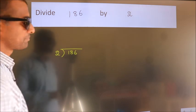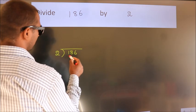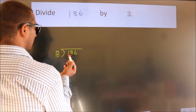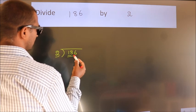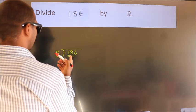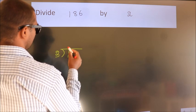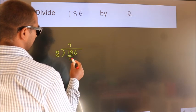Next. Here we have 1, here 2. 1 is smaller than 2, so we should take 2 numbers: 18. When do we get 18 in the 2 table? 2 times 9 is 18.